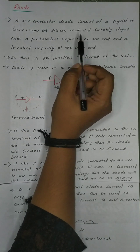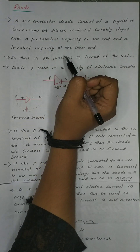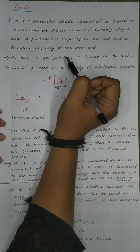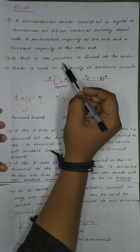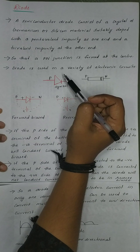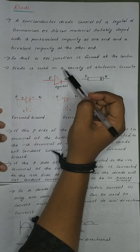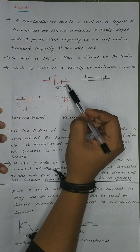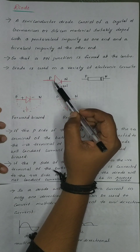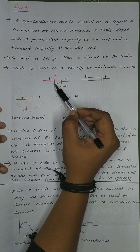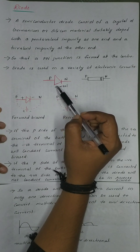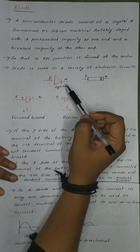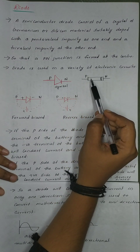A PN junction is formed. This diode is used in a variety of electronic applications and electronic circuits. This diode is simple — one side is P-type and the other side is N-type. This diode is used in our lab.